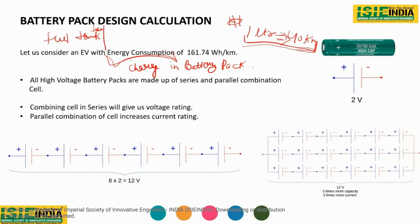In a conventional vehicle there is a fuel tank, but in an electric vehicle we have a battery pack storing the energy. If you increase the size of the fuel tank you increase the range of your vehicle, and similarly in electric vehicles, if you increase the size of your battery pack, you increase the range. The battery pack is analogous to the fuel tank — here you are storing charge, and more charge gives you more range in kilometers.